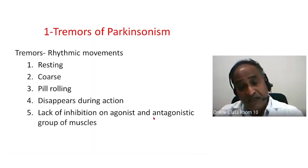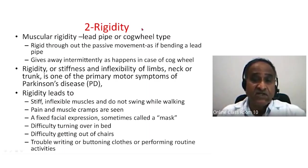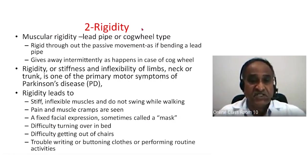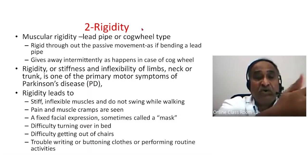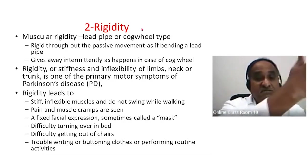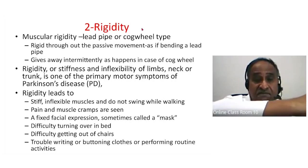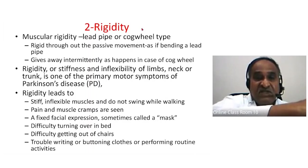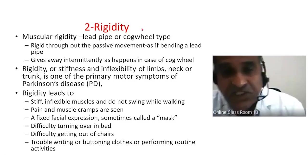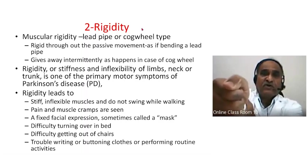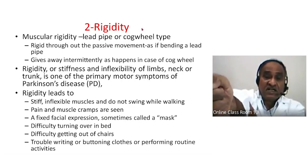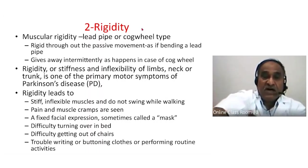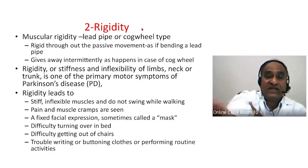Now rigidity: in basal ganglia disorders, especially Parkinson's disease, the muscles become very rigid and tight. Both the agonist and antagonist group of muscles — for example, both biceps and triceps — are contracted simultaneously. You cannot bend the limb because both flexors and extensors are contracted. This is lead pipe rigidity, appearing like a lead pipe when you try to bend it.